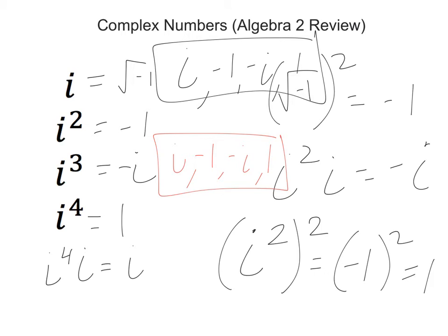So if you wanted something like i to the 50th power, we know that that would be i to the 48th power times i squared. Well, 48 is a multiple of 4, so that just becomes positive 1. And then i squared is negative 1. So i to the 50th power is equal to negative 1.